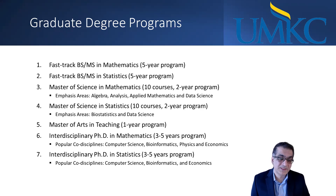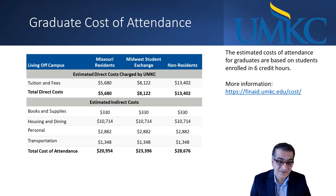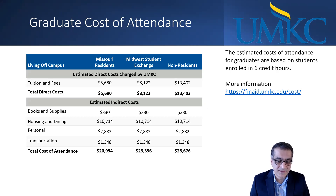The popular co-disciplines are computer science, bioinformatics, physics, and economics. The next slide is about the cost of attendance and the cost of the graduate programs. As you can see, UMKC is one of the least costly universities. Total direct cost is less than $6,000 per semester, and the total cost of attendance is about $21,000. Kansas City is also one of the least costly cities in the US.